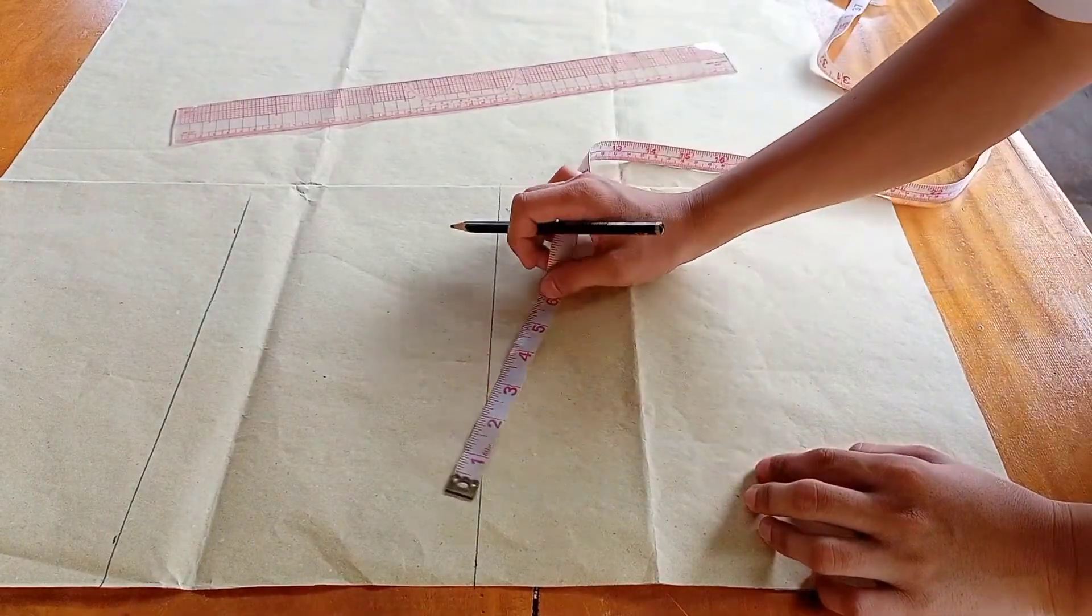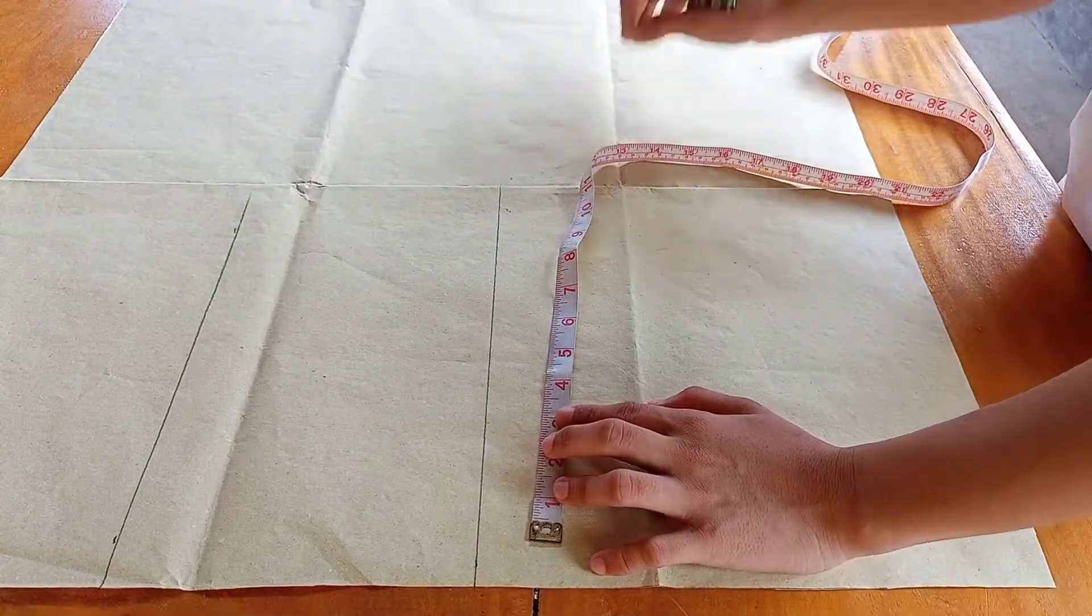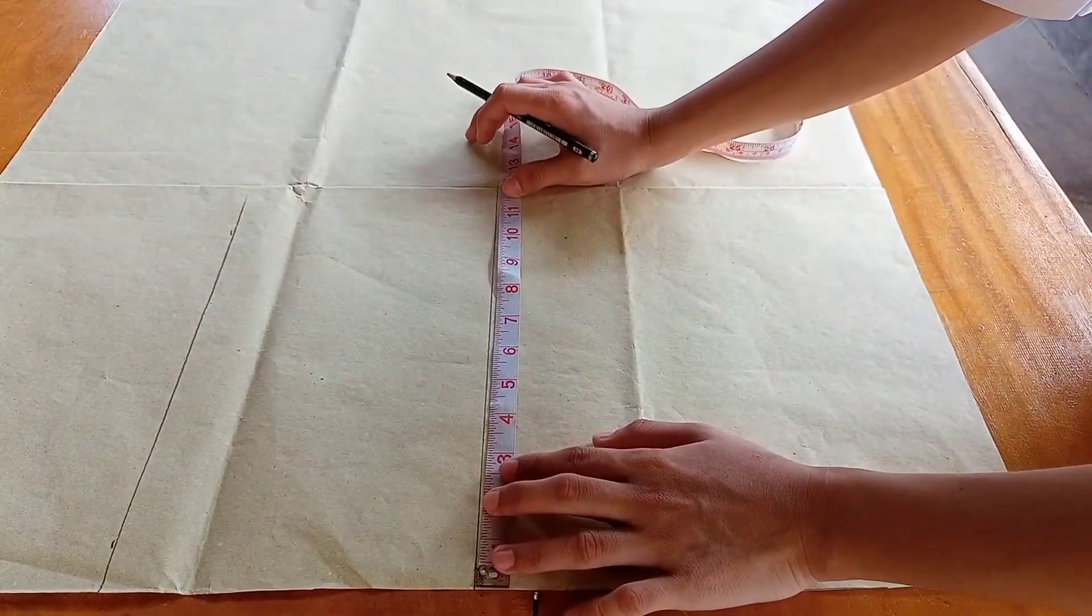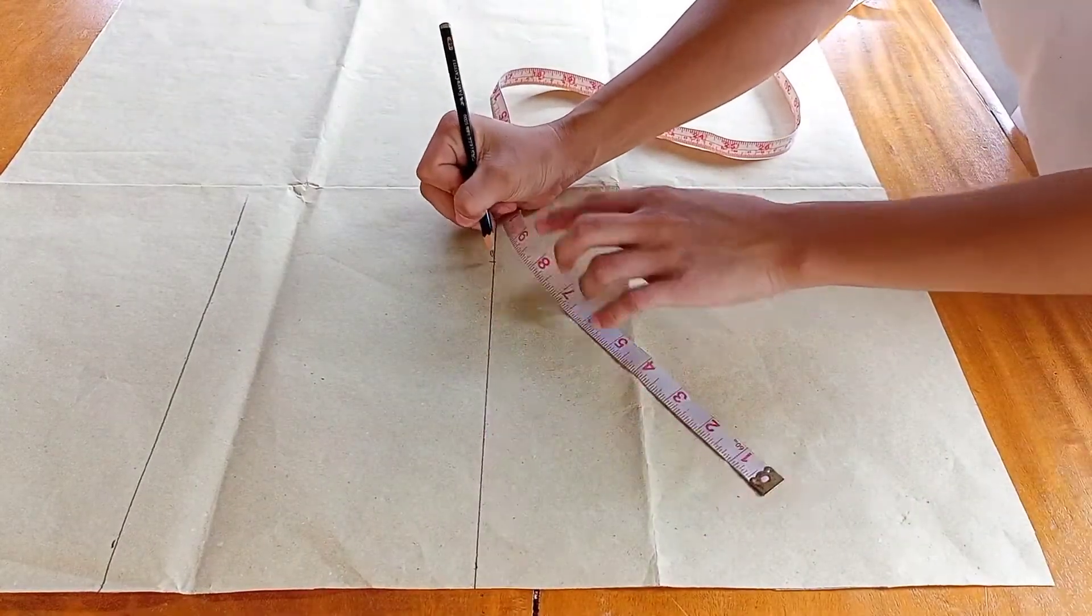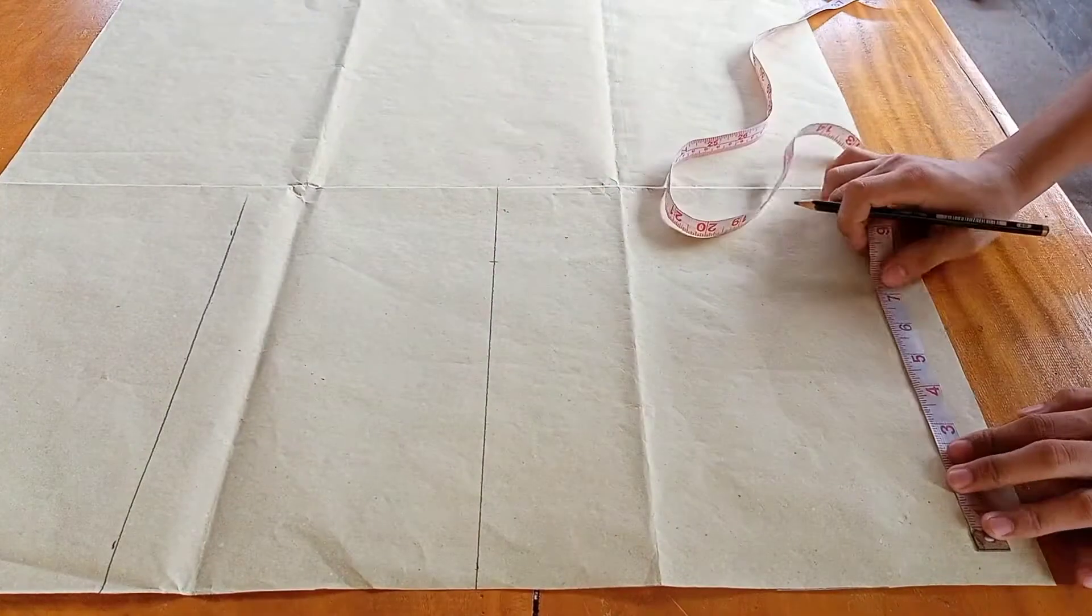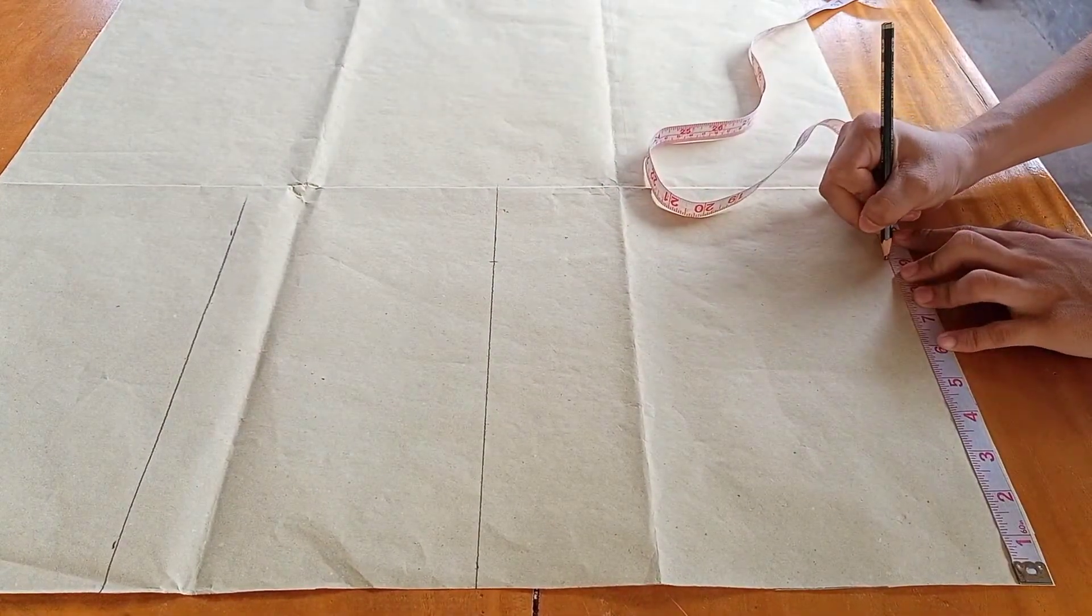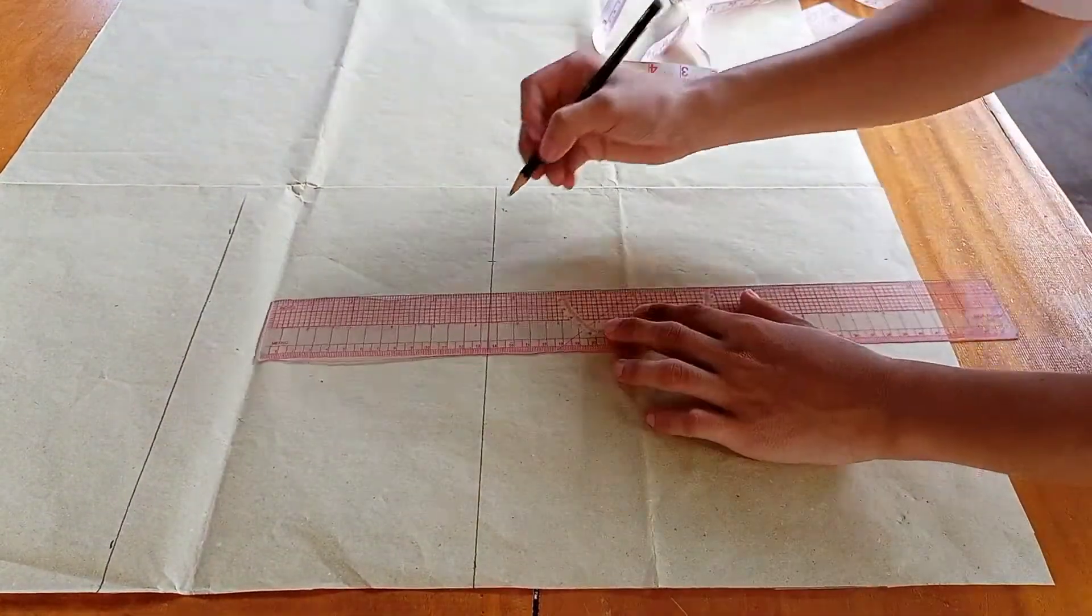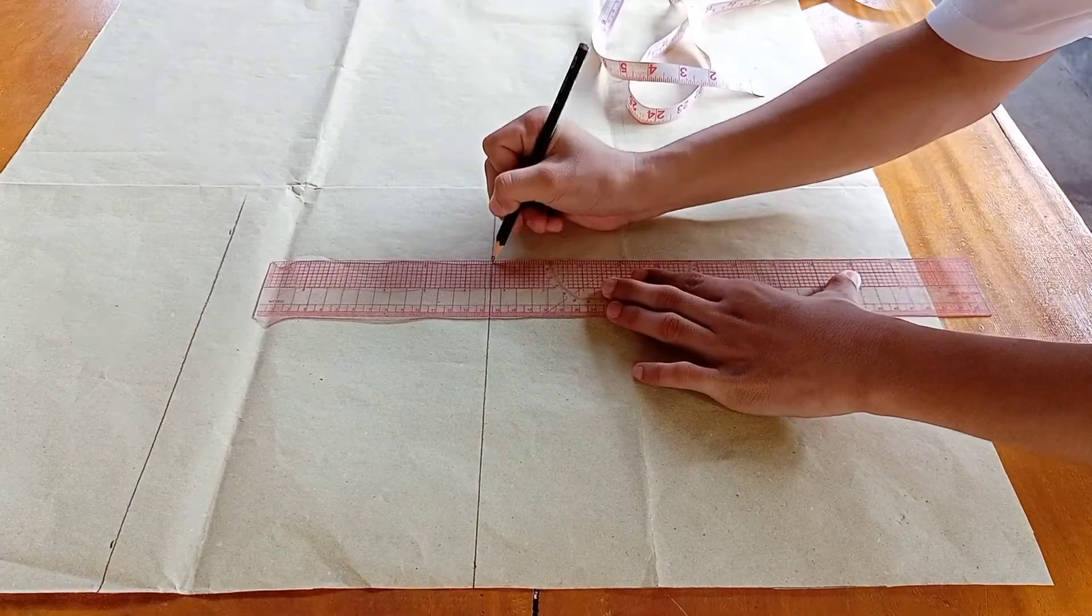Now, measure one-fourth of the hip measurement. My measurement is 36 inches divided by 4 equals 9. Measure 9 inches forward, also 9 inches from the hemline. The hip line and hemline have the same measurement. Square downward using a ruler.